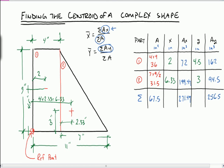Now, let's look again at the equation. x bar, which is the distance x measured over from our reference point here, is going to equal the sum of the Ax's, that number there, 271.49 divided by the sum of the areas, 67.5. Notice that this is in inches cubed and this is inches squared and so my answer is going to come out in units of inches, which it should. The answer is 4.02 inches. So that brings me over just past this red line, right about here.